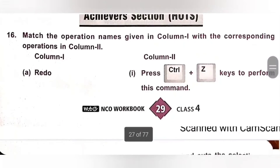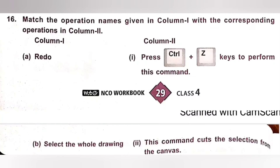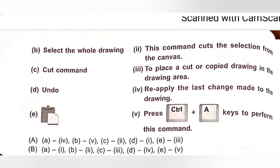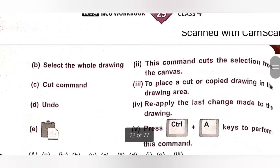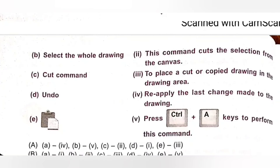Achiever Section — Question 16: Match the operation name in Column 1 with the corresponding operation in Column 2. A. Redo — reapply the last change made to the drawing, matches 4. B. Select the whole drawing — press Ctrl+A key, matches 5. C. Cut command — cuts the selection from the canvas, matches 2.